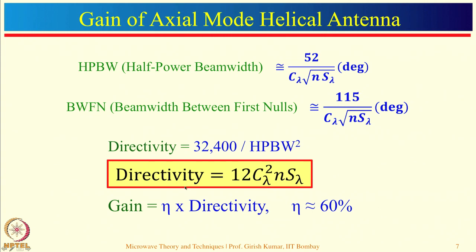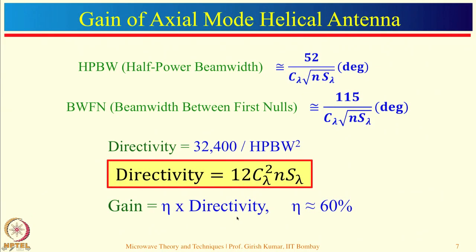It is important to note that this expression gives directivity, not gain. Gain equals efficiency multiplied by directivity, and the typical efficiency of an axial mode helical antenna is of the order of 60 percent. Please apply this factor to find the gain of the antenna.